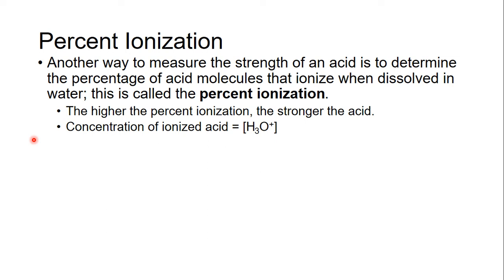Another way to measure or talk about the strength of acids is called percent ionization. That is, how many molecules will give off an acidic hydrogen. The higher that percentage, the stronger the acid. And that concentration of the acid that gave off your hydrogen, that's your H3O+ concentration.